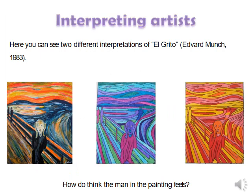Now let's look at an artist interpretation. This is a painting named El Grito. You can see two different interpretations of it. How do you think the man in the painting feels? The first version combines cool and warm colors, the second uses only cool colors, and the third uses only warm colors. How do you think the man in the painting feels? We can discuss this question together on Zoom.